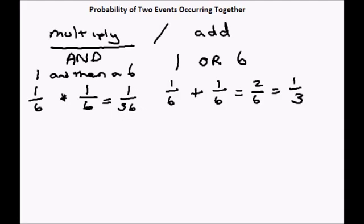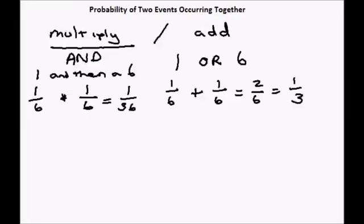So that is the basics. Let's look at a couple of actual problems. I have a sample problem here. The odds of you getting a job you applied for are 45 percent and the odds of you getting the apartment you applied for is 75 percent. What is the probability of you getting both the new job and the new car?